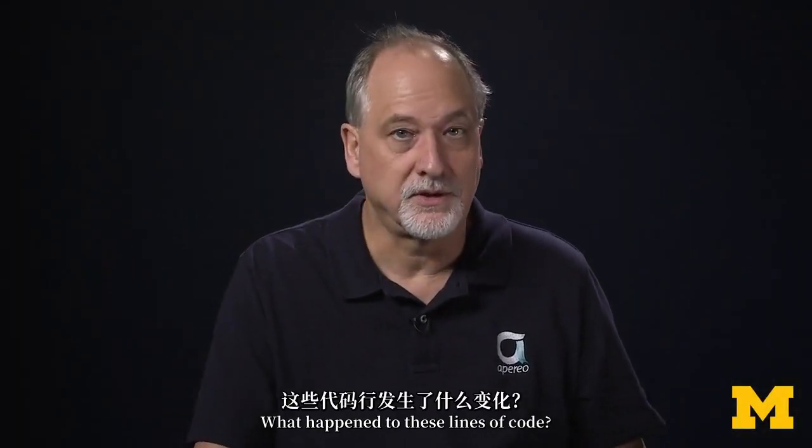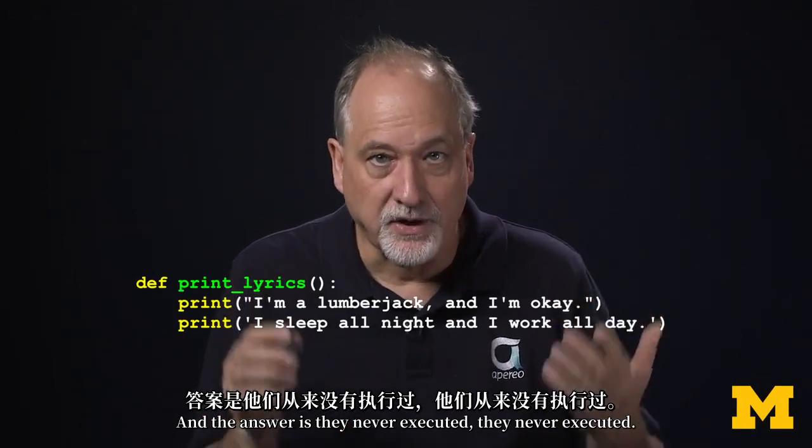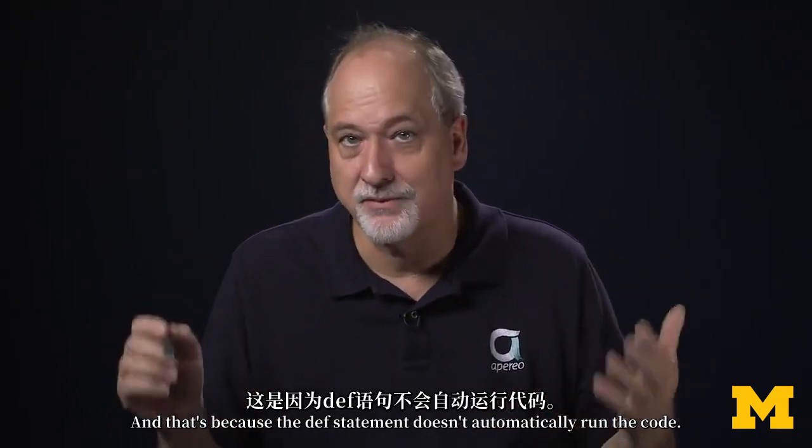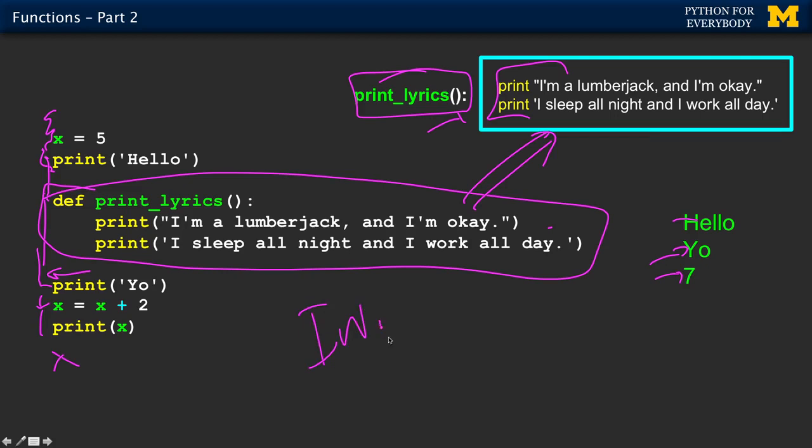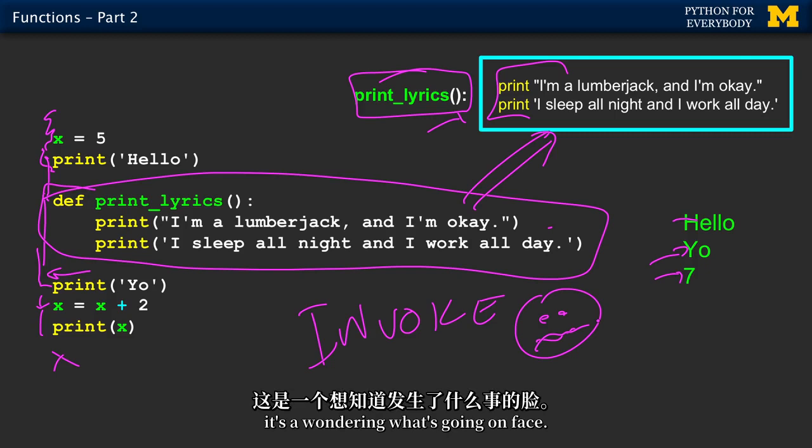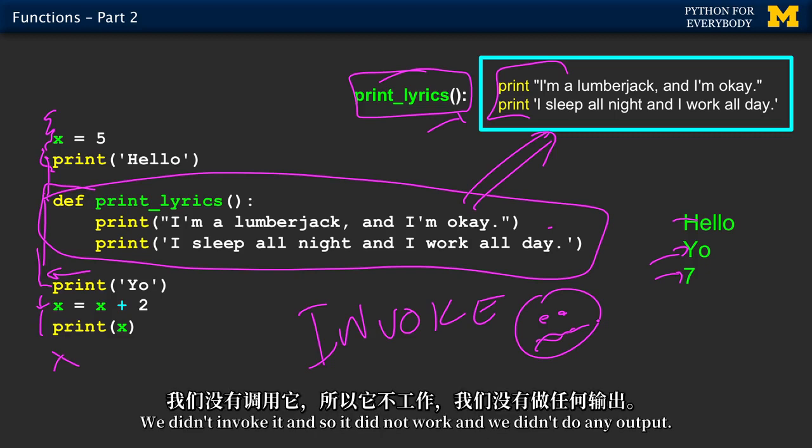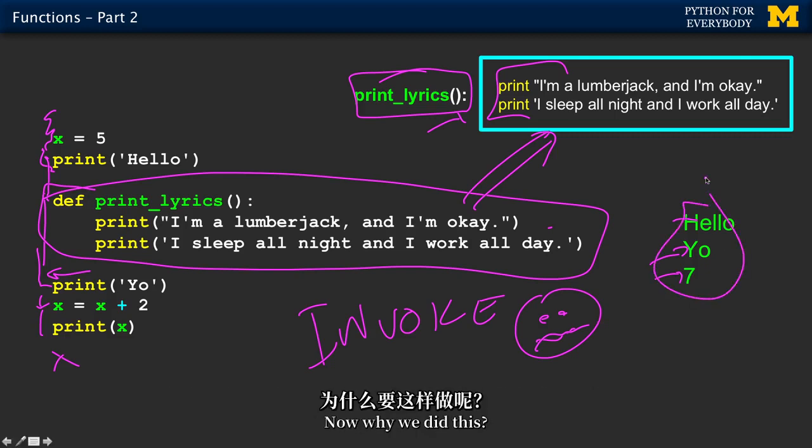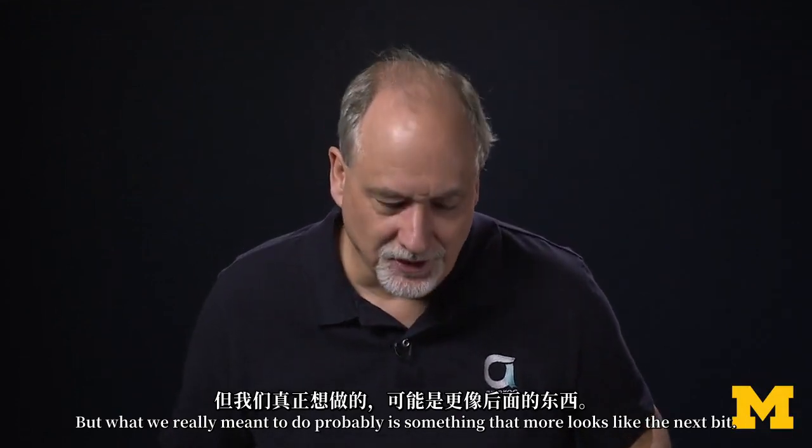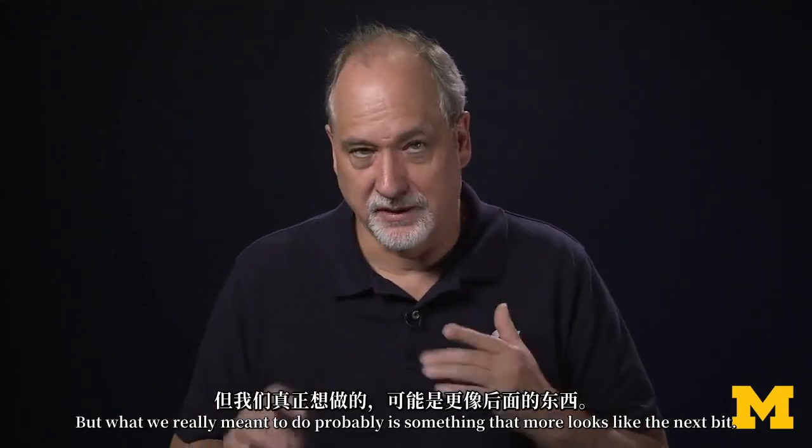Where, what happened to these lines of code? The answer is, they never executed. And that's because the def statement doesn't automatically run the code. You must invoke. We did not invoke the function. It's a wondering what's going on face. So we didn't invoke it. And so it did not work, and we didn't do any output. Now why we did this, I don't know why we did this. Who knows why we did this? But what we really meant to do probably is something that more looks like the next bit.